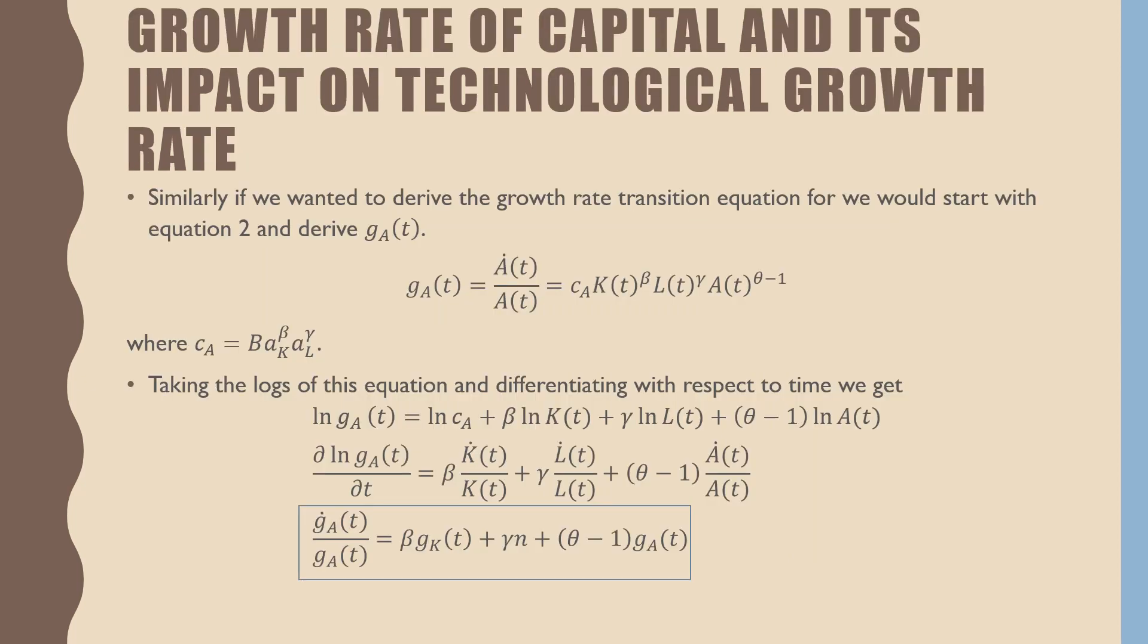Similarly, if we wanted to derive the growth rate transition equation, we would start with equation two and derive our growth rate for technological stock. This would be by taking our R and D sector and dividing it by A. Taking logs of both sides of this equation and differentiating with respect to time, we get our technological growth rate transition equation, which is equal to beta times our growth rate of capital stock at time t plus gamma N plus theta minus one times our growth rate in technological stock.